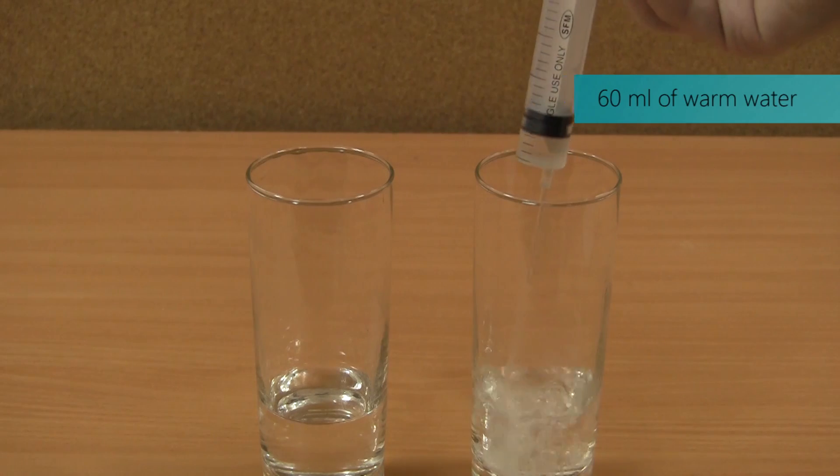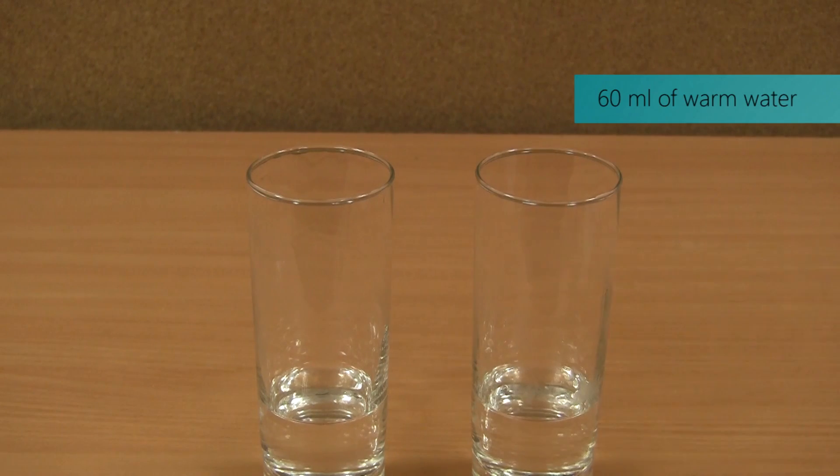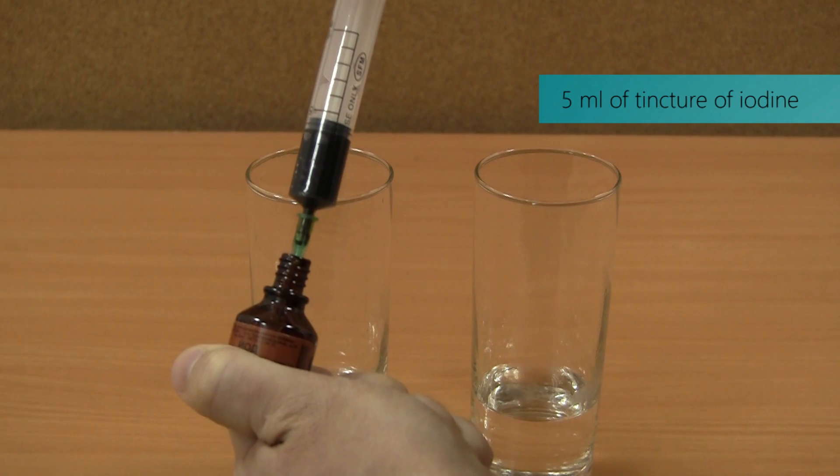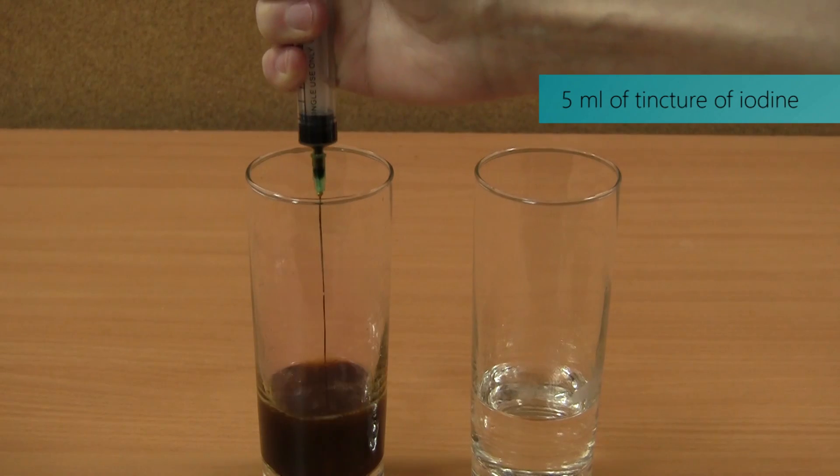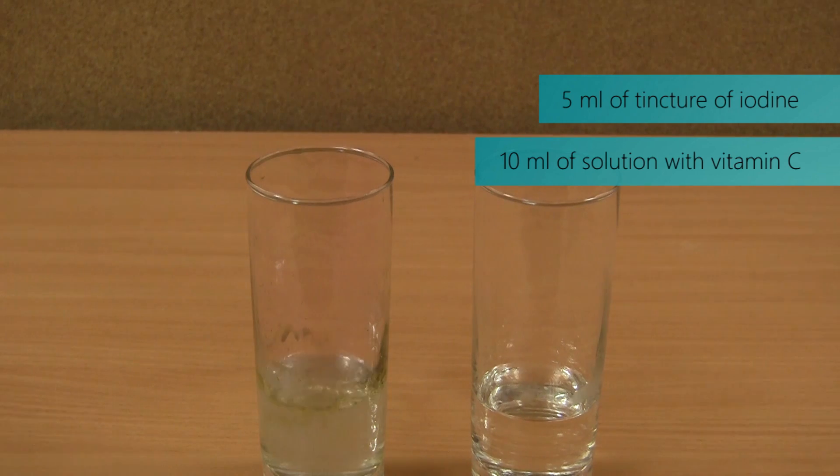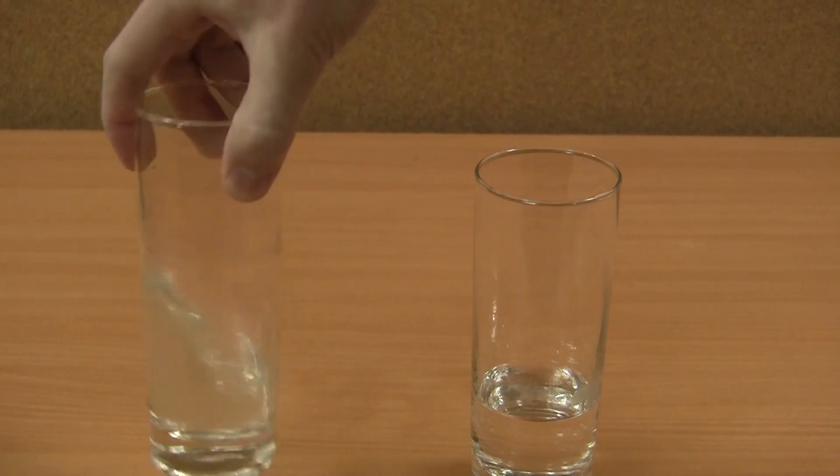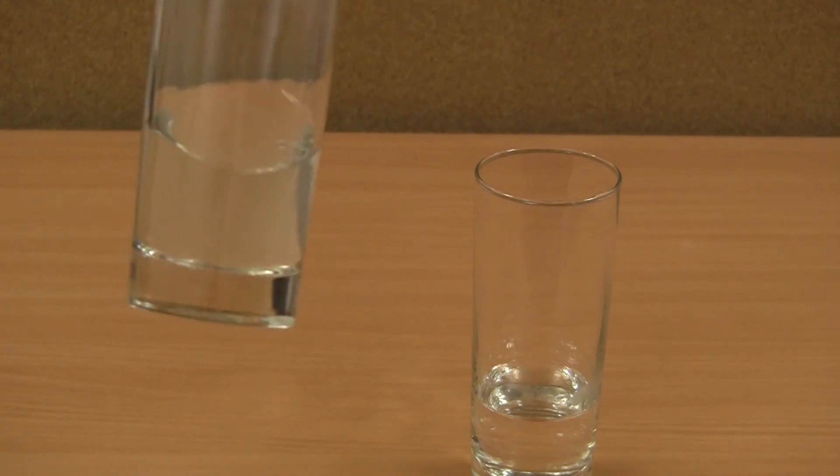Pour 60 ml of warm water in each glass. In the first glass add 5 ml of tincture of iodine and 10 ml of solution with vitamin C. Note that iodine became transparent.